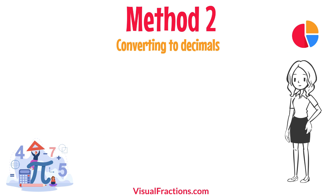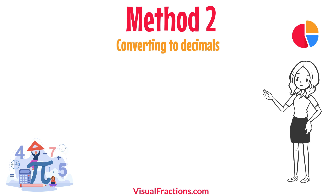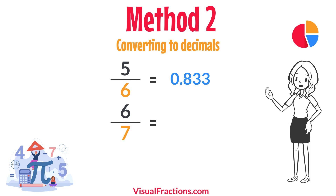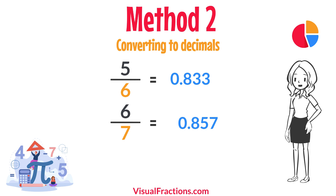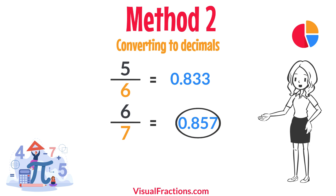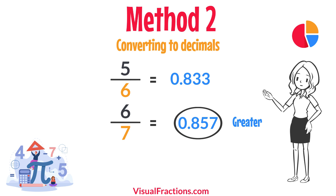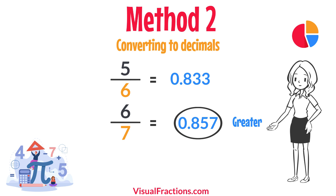For a second method, let's convert each fraction to a decimal. Using a calculator, divide 5 by 6 to get approximately 0.833, and divide 6 by 7 to get approximately 0.857. This calculation shows that 0.857 is greater than 0.833, confirming that 6 sevenths is indeed greater than 5 sixths.